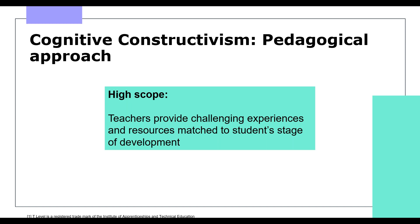Now we will explore pedagogical approaches. High Scope is a way of working with children based on the idea that children learn best from active learning experiences which they plan and carry out themselves. In this way, children learn that they are capable, able to make decisions and solve problems about activities which are personally meaningful to them. You may have experienced this in placement — if so, share your ideas with your peers.